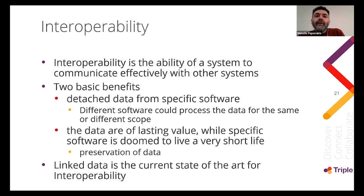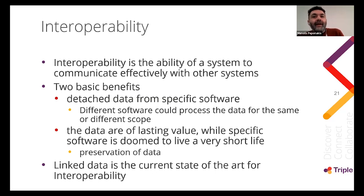A key concept across the linked data ecosystem is interoperability — the ability of a system to communicate effectively with other systems. It ensures that data are detached from specific software. The data are meant to have lasting value, while specific software is doomed to live a very short life. So in order to let the data travel with us, we must reduce their dependency on specific software, because data are of lasting value while specific software is not.